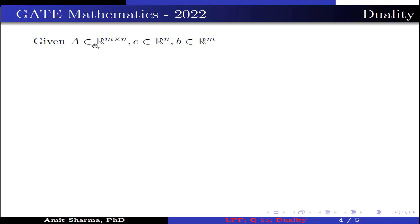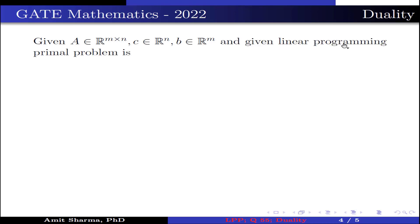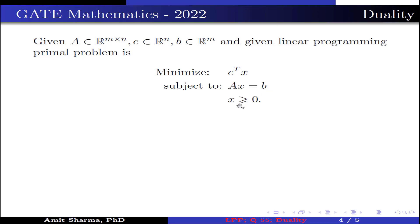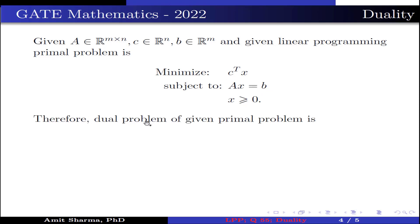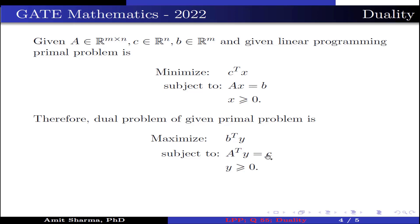Now, given A ∈ R^(m×n), C ∈ R^n, and B ∈ R^m, the given linear programming primal problem is: minimize C^T x subjected to Ax = b, x ≥ 0. Therefore, the dual problem of the given primal problem is: minimize b^T y subjected to A^T y = c, y ≥ 0.